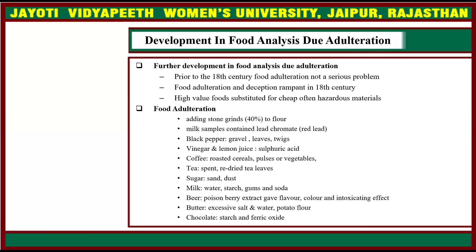Examples of food adulteration include: adding stone grinds (about 40%) to flour; milk samples containing lead chromate, that is red lead; black pepper containing gravels, leaves, twigs or papaya seeds; vinegar and lemon juice containing sulfuric acid; and coffee containing roasted cereals, pulses, vegetables, or chicory.